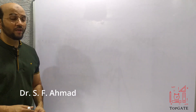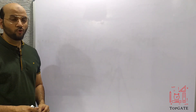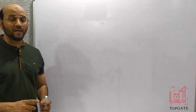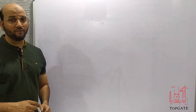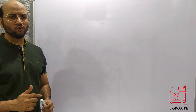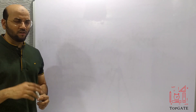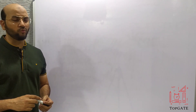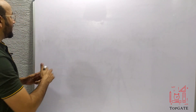Hello students, welcome to the channel TopGate. Today we will discuss one more PDA question: design a PDA for the language L equal to A to the power N, B to the power 2N. This is a very commonly asked question in university exams as well as in the GATE exam. So let us start with this one.